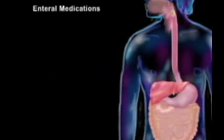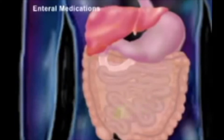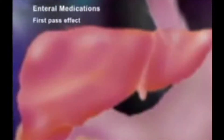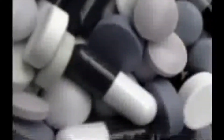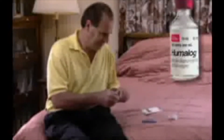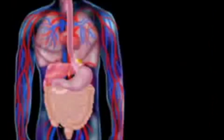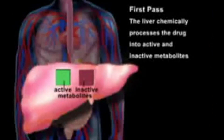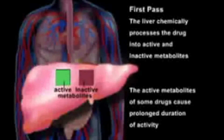Enteral medications are broken down within the GI tract and absorbed into the bloodstream where they are carried directly to the liver, allowing the liver to act on the medication before it is distributed. This is called the first pass effect. The degree varies, but any drug not given by some form of injection will always have a bioavailability of less than 100%. Some substances such as insulin are broken down in the GI tract into a non-therapeutic substance and therefore cannot be given enterally. During first pass, the liver chemically processes the drug into active and inactive metabolites.